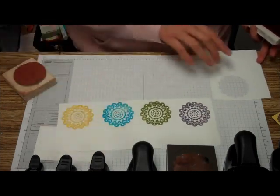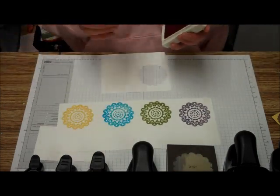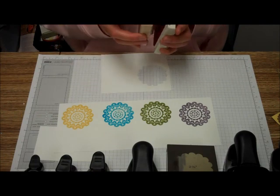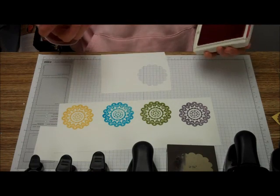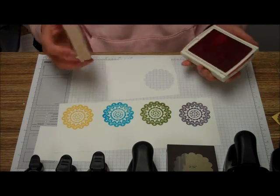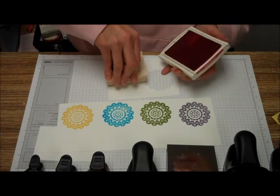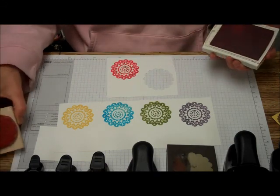Clean that one, and then we're going to use the Melon Mambo. Aren't those colors all great together? They're so vibrant, so beautiful. At first I didn't think that Old Olive would be a bright color, but with the other bright colors it looks really great.